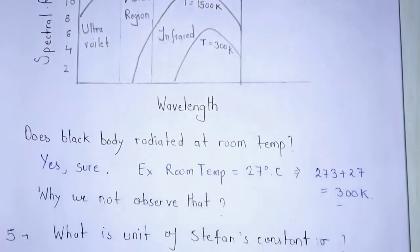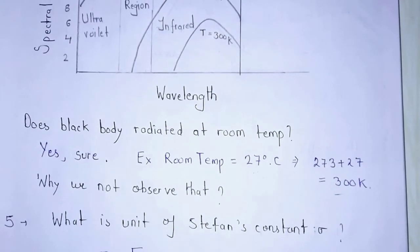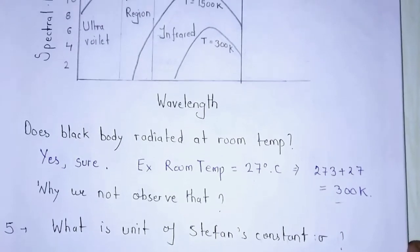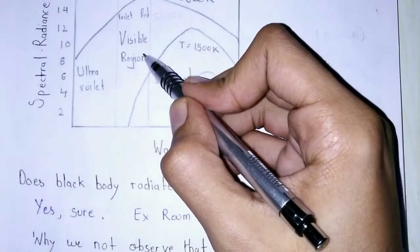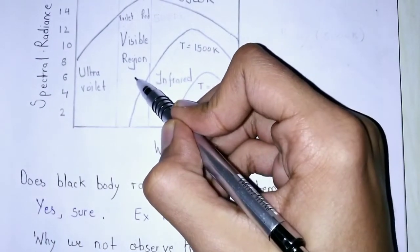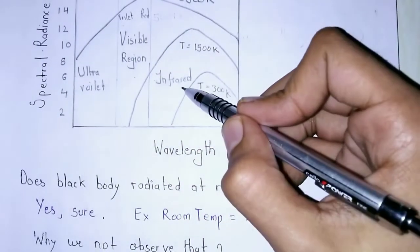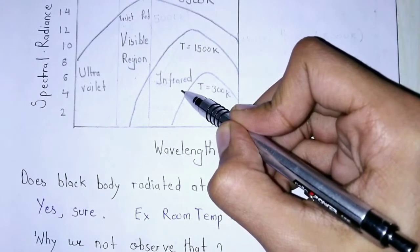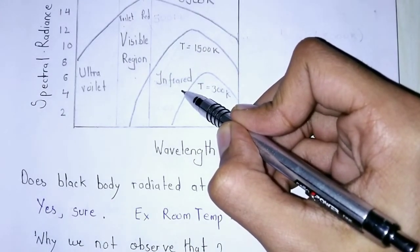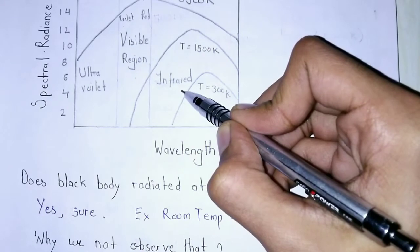My next question is related to that, why we not observe that? We cannot observe that just because we are human beings and we can only observe the radiation of visible region. But at room temperature there is radiation of infrared region. That's why we are not able to see it through our naked eye.